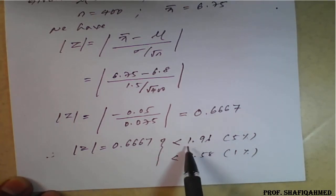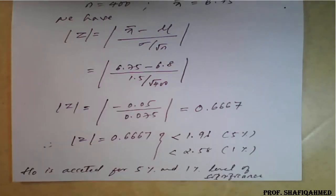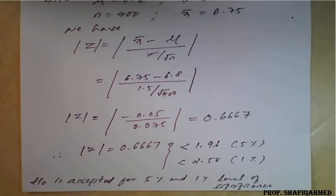Therefore, less than 1.96, we will accept it. The 0.6667 is also less than 2.58, that is for 1%. What here, accepted. Therefore, we have to write a conclusion. Therefore, we need to say that H₀ is accepted for 5% and 1% level of significance. You can conclude it like that.